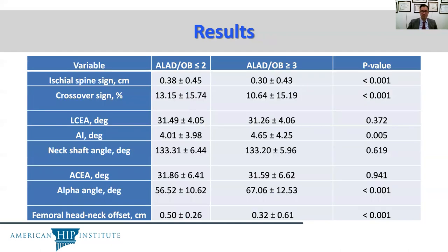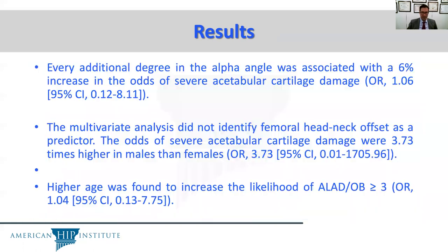What we found was that there was significance for ischial spine sign, crossover sign, alpha angle, and femoral head-neck offset, as well as acetabular inclination in predicting cartilage defects. Every additional degree of alpha angle was associated with a 6% increase in the odds of severe acetabular cartilage damage. The multivariate regression analysis did not identify femoral head-neck offset as a predictor.